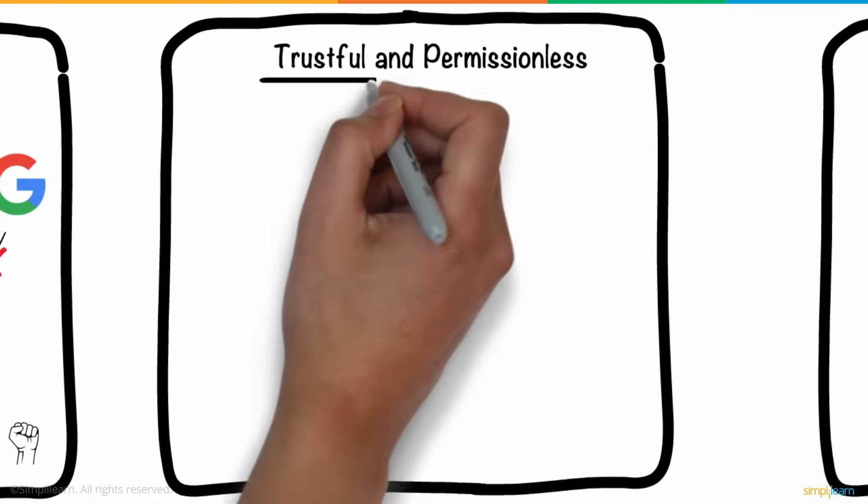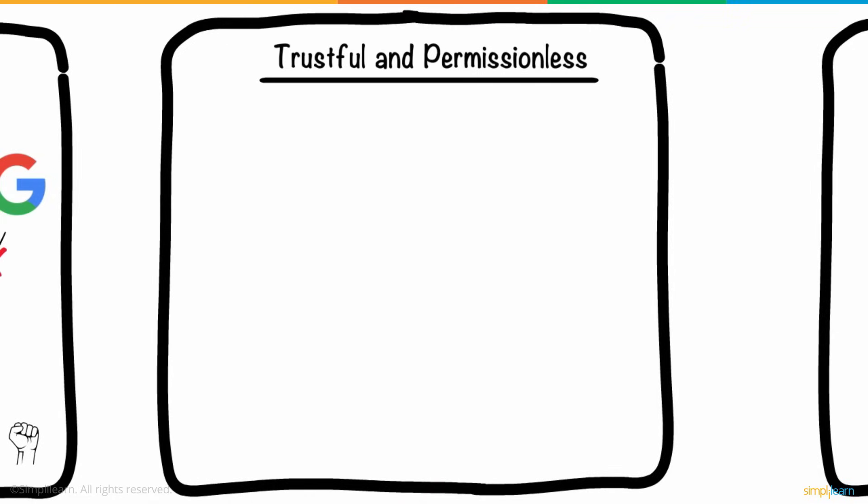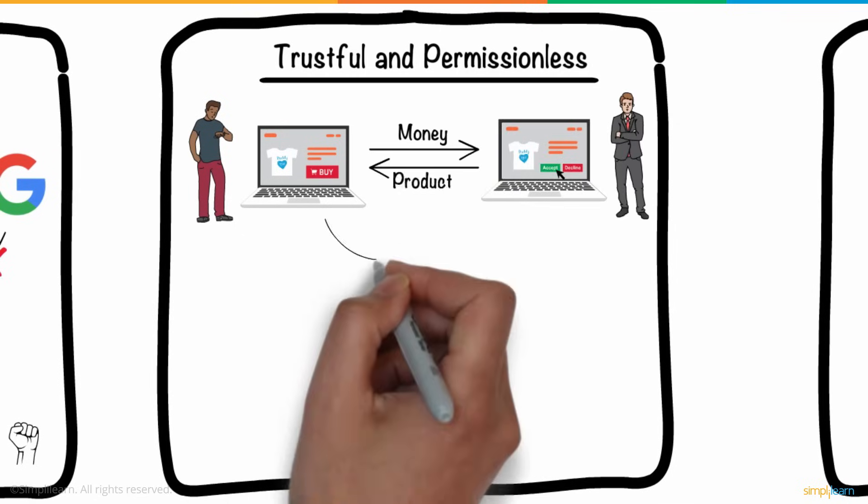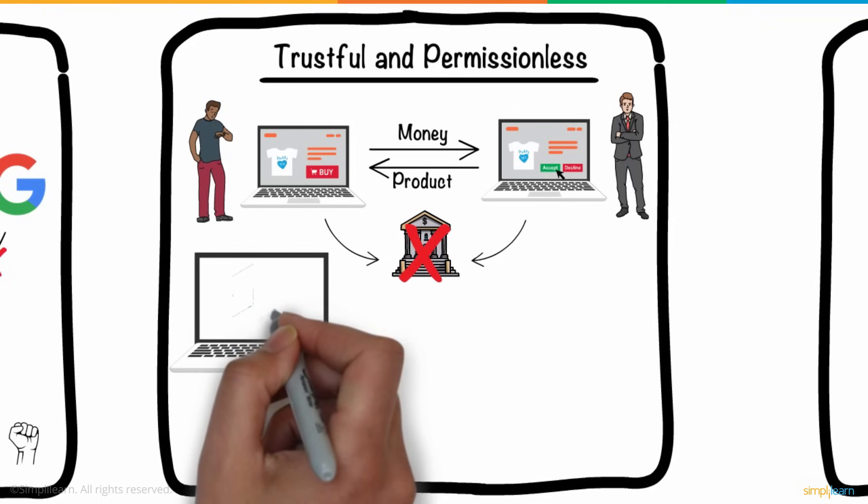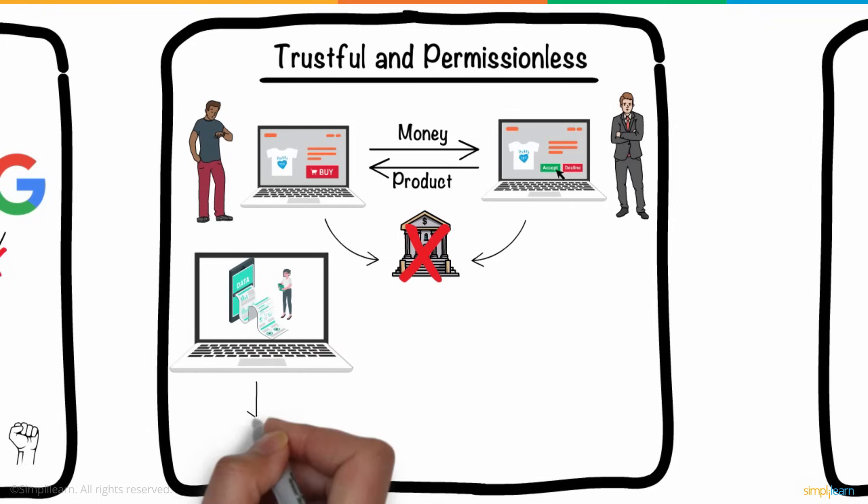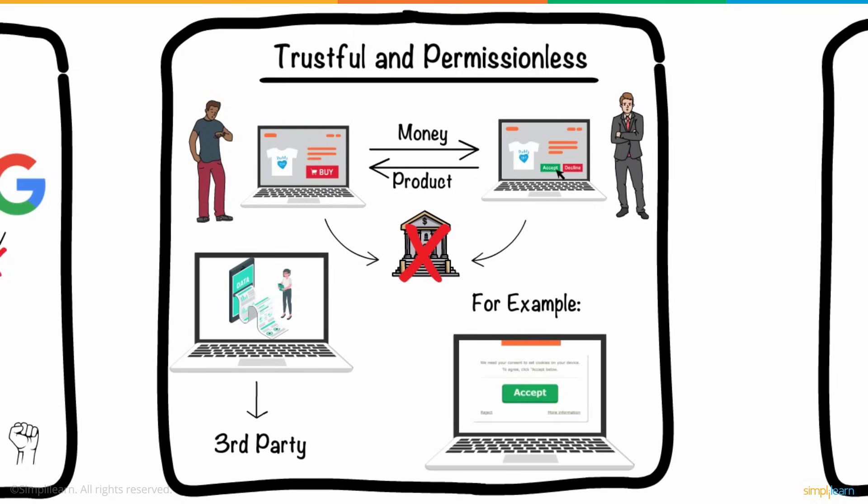Second is trustful and permissionless. Web 3.0 will also be trustful and permissionless, which means that participants will be able to interact directly without the need for a trusted intermediary or permission from a governing body. Due to this, you can access any data relevant to your choice, without any permission from any other node or third party. For example, if you are researching for some data, you don't need to accept its cookies, or you don't need to provide any sort of details, as there is a trustful bond between you and the web.